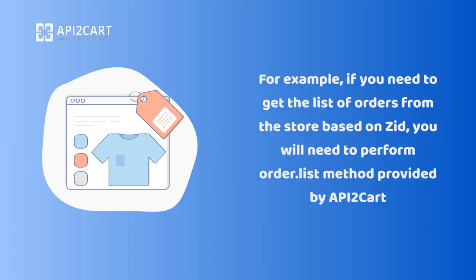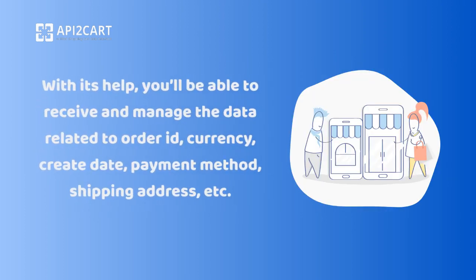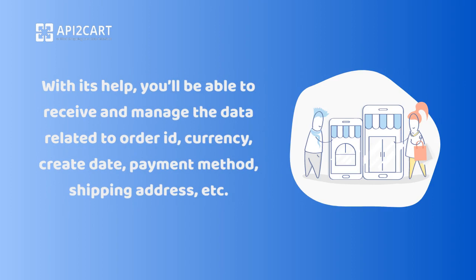For example, if you need to get the list of orders from the store based on Zid, you will need to perform the order list method provided by API2Cart. With its help, you'll be able to receive and manage the data related to order ID, currency, create date, payment method, shipping address, etc.